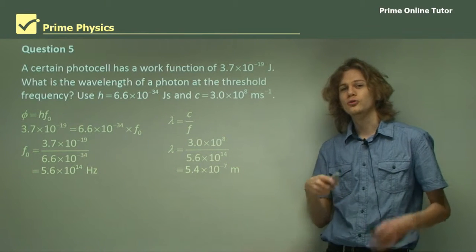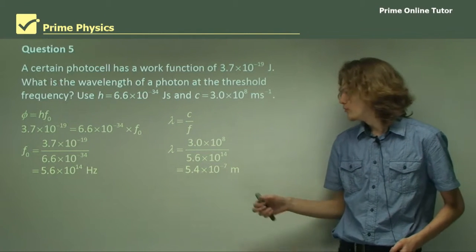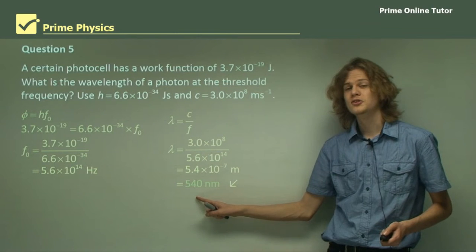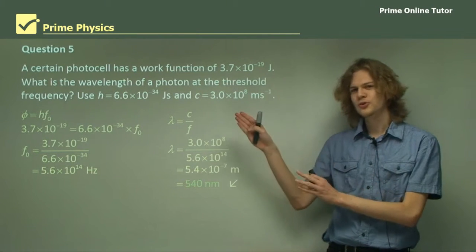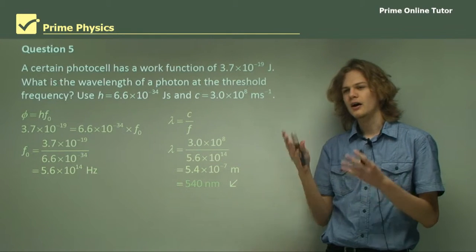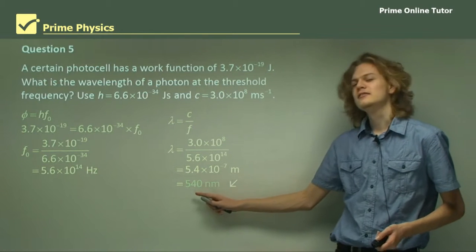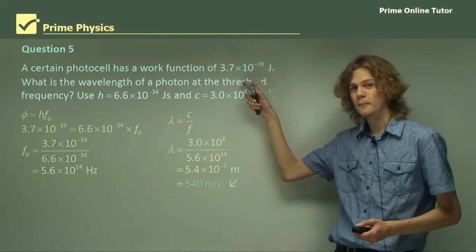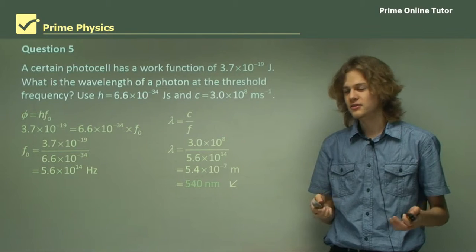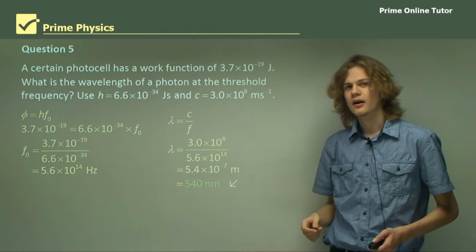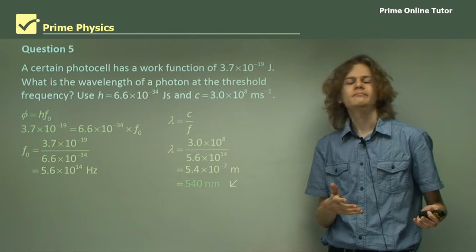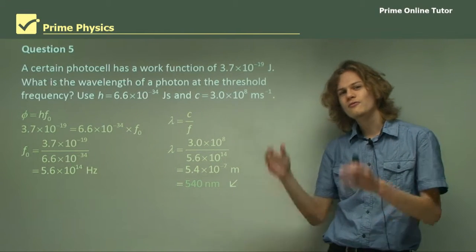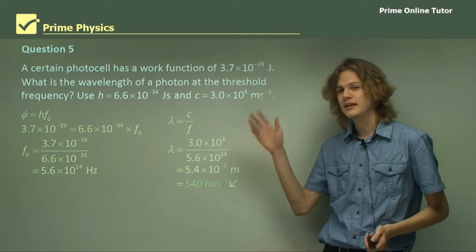Now we have the threshold frequency, so we need to find the wavelength. To find the wavelength of a photon, we use the equation: wavelength equals the speed of light over the photon's frequency. Substituting the speed of light and the photon's frequency, we get an expression for the exact wavelength of the photon: 5.4 × 10⁻⁷ meters. Normally we measure photons of visible light in nanometers, so dividing by 10⁻⁹, we end up with 540 nanometers, which is a green colour. Most photocells are only active in ultraviolet frequencies, but in this case a green photon can activate the photoelectric cell because this work function — the work function of potassium — is actually quite low. Most metals have a much higher work function, and so green light is the very lower energy boundary that can be detected by a photocell.